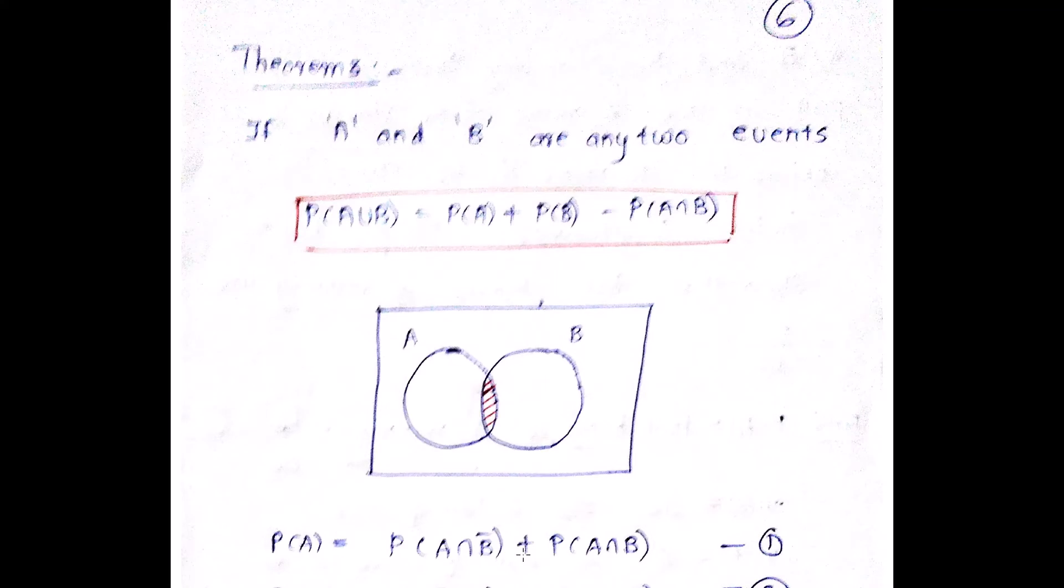The next theorem and a very important formula in probability. You have to remember this formula by heart. It is going to be used repeatedly. So please make a note of it. It says if A and B are any two events, then probability of A union B is equal to probability of A plus probability of B minus probability of A intersection B.